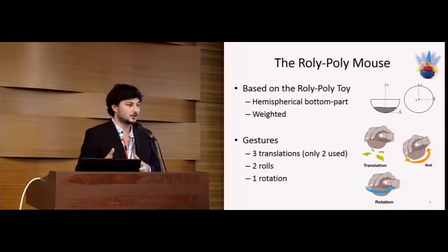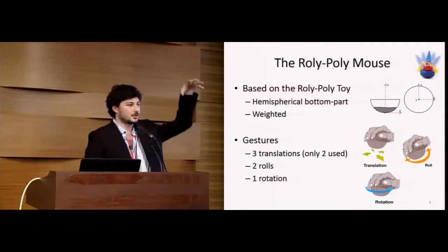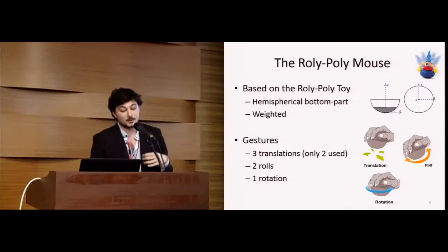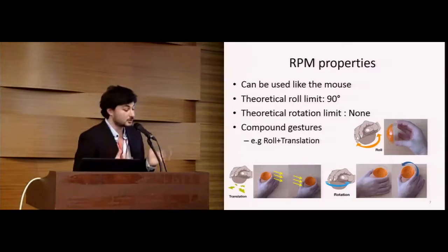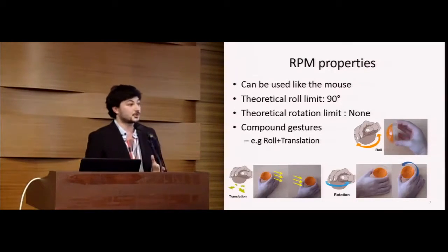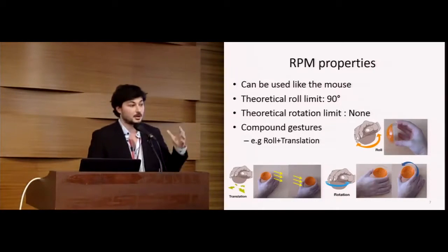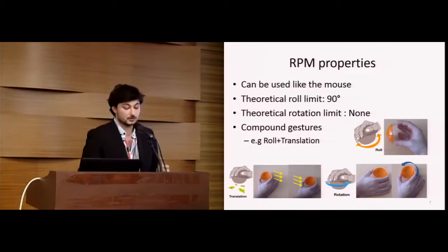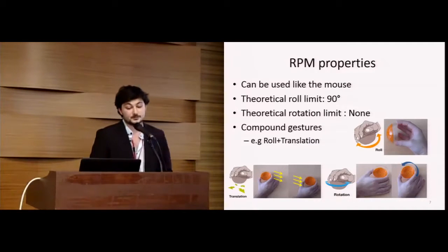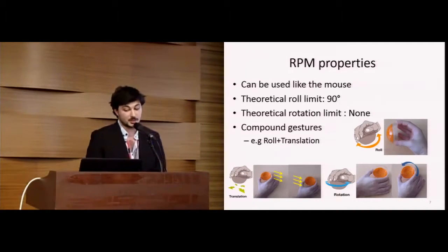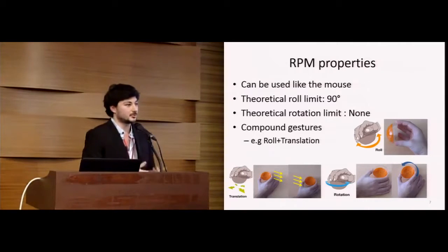In our studies, we don't focus on the third dimension, the Z axis, due to the fatigue issue. The most important thing with this device is that it keeps the properties of a regular mouse, so it can still be used in 2D translation on an experimental table. It has a theoretical roll limit of 90 degrees due to its hemispherical bottom part, and it has no theoretical rotation limit due to the fact that it's totally symmetrical.